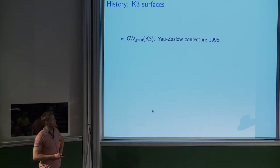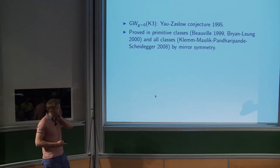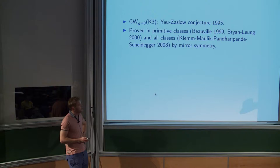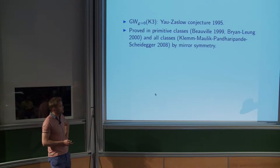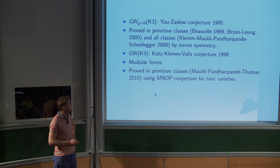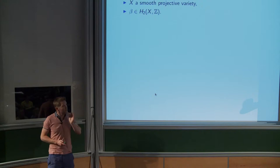In the case of K3 surfaces in genus zero, there was the Yau-Zaslow conjecture in 1995, involving modular forms. It was proved for primitive classes — classes which are not multiples of other classes — by Beauville and Bryan-Leung. Then in all classes but in a very roundabout way, invoking mirror symmetry in genus zero, relating it to variations of Hodge structure. For the full Gromov-Witten theory of K3 in all genera, there's the Katz-Klemm-Vafa conjecture.